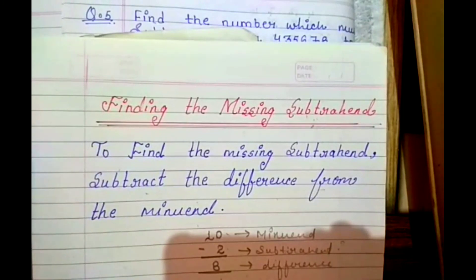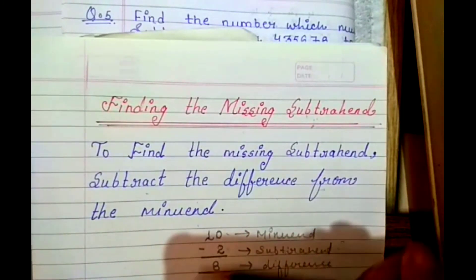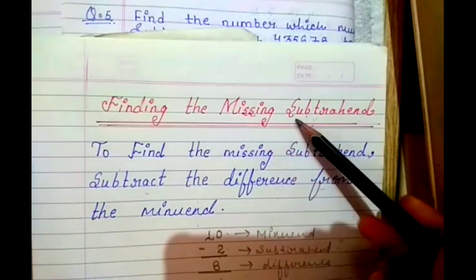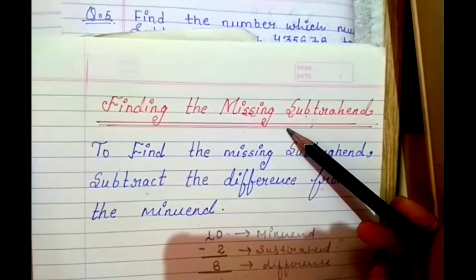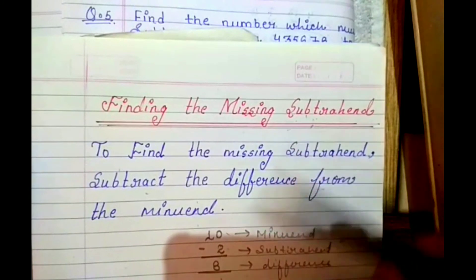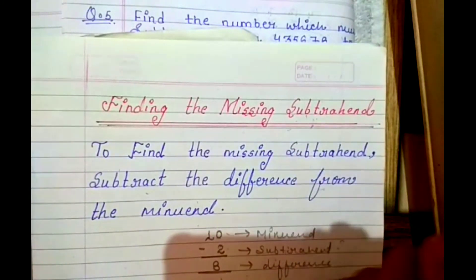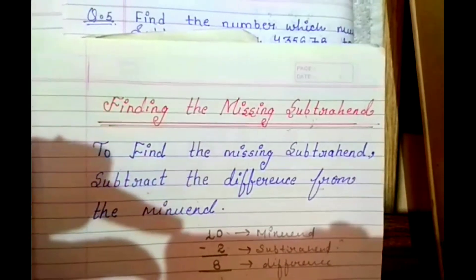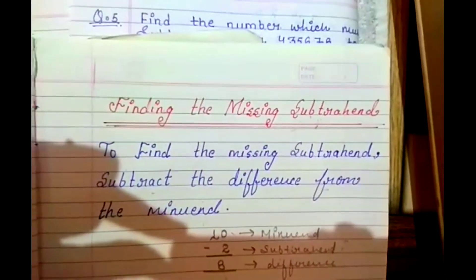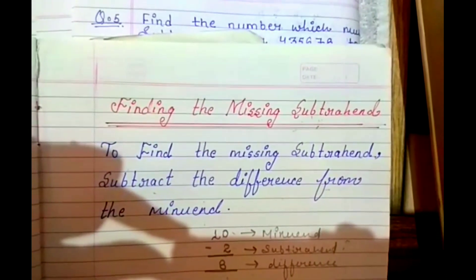अभी अपनने पढ़ा था कि जब subtrahend find करना रहता है, minuend में से difference को minus कर देते हैं। तो as it is ये number write कर दिया, उसके बाद ये number write कर दिया, और इन दोनों को minus कर दिया। तो अपना subtrahend आ गया। Minus करने पर वो answer check भी हो जाता है। आज आपने सीखा कि subtrahend को minuend में से difference को minus करके find करते हैं। Thank you.